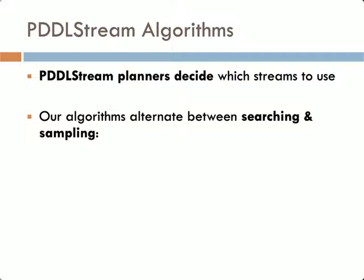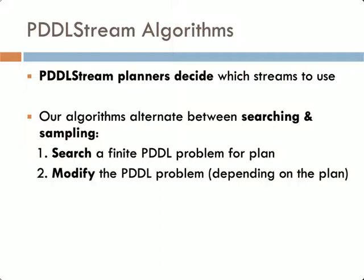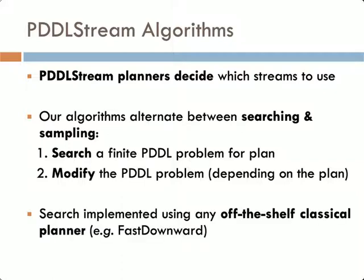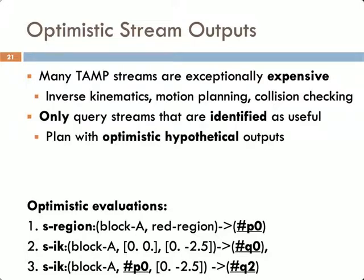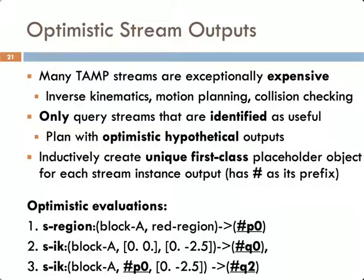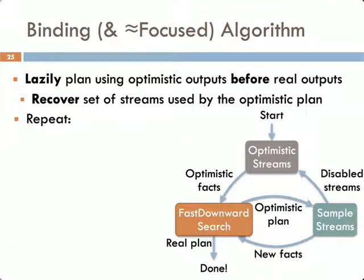We present several algorithms that alternate between searching and sampling phases. Each algorithm roughly does the following: search a finite PDDL problem for a plan, then modify this problem using the streams depending on the results of that plan. As a result, all of these algorithms can implement the search phase using any off-the-shelf classical planner. Part of PDDLStream planning is intelligently identifying which streams are useful for the given problem, since many streams are computationally expensive to evaluate due to things like collision checking. In our advanced algorithms, we do this by first planning with optimistic hypothetical outputs of streams before actually querying values. For each stream and tuple of inputs, we create a placeholder object that serves as a hypothetical output, which can be an input to other streams, and then we plan using this set of objects before actually querying real values.